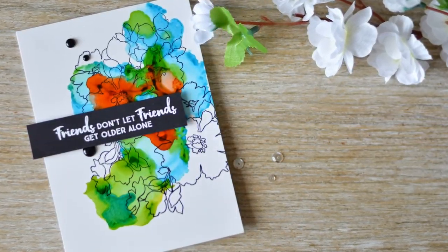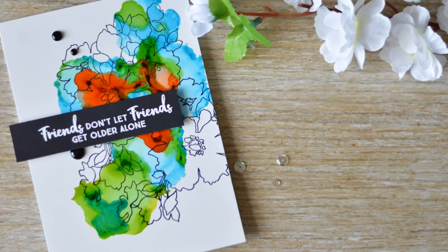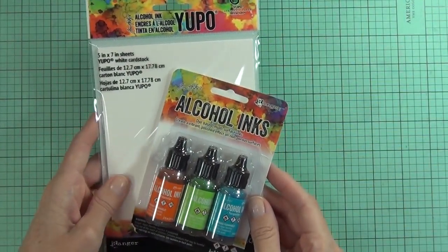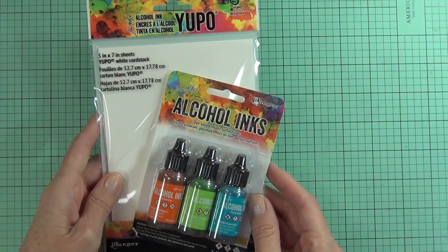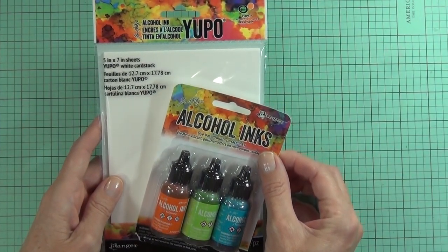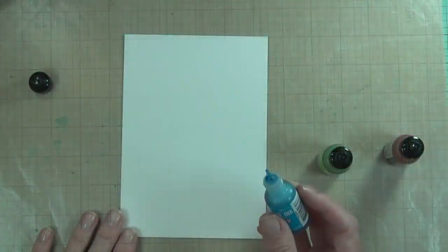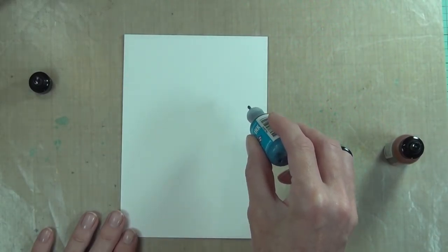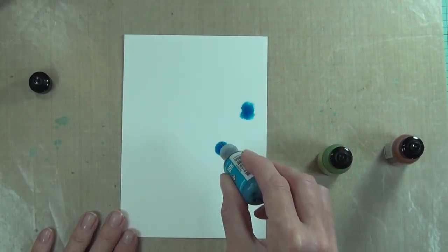Hi it's Therese from Lost in Paper and I'm here for Scrapbook Boutique today. I have decided to play with some Yupo and some alcohol inks. There's heaps of great ideas out on the internet at the moment using these really fun products, so I just thought I'd try and see how I can get them to work for me.